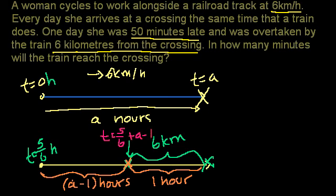So we now have all the information we need to solve this problem. On the day she is late, the train passes her at time equals 5/6 plus a minus 1 hours, where a is the time it normally takes her to travel her entire route. We know the train passes this point at t equals a.